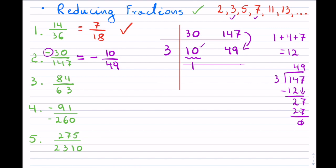Notice that the only primes that go into 10 are 2 and 5, and neither 2 nor 5 goes into 49. So I stop — that is my second example.